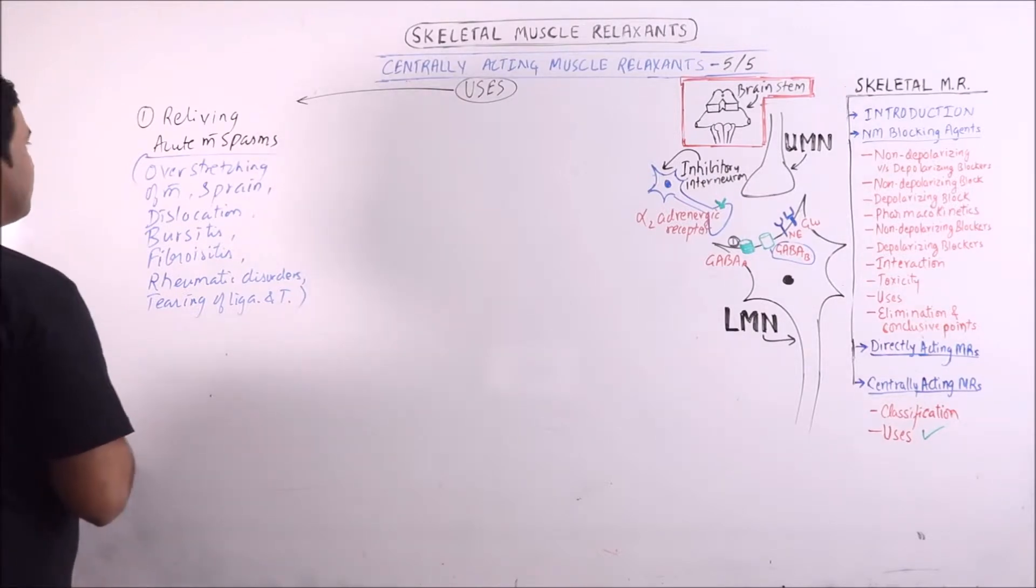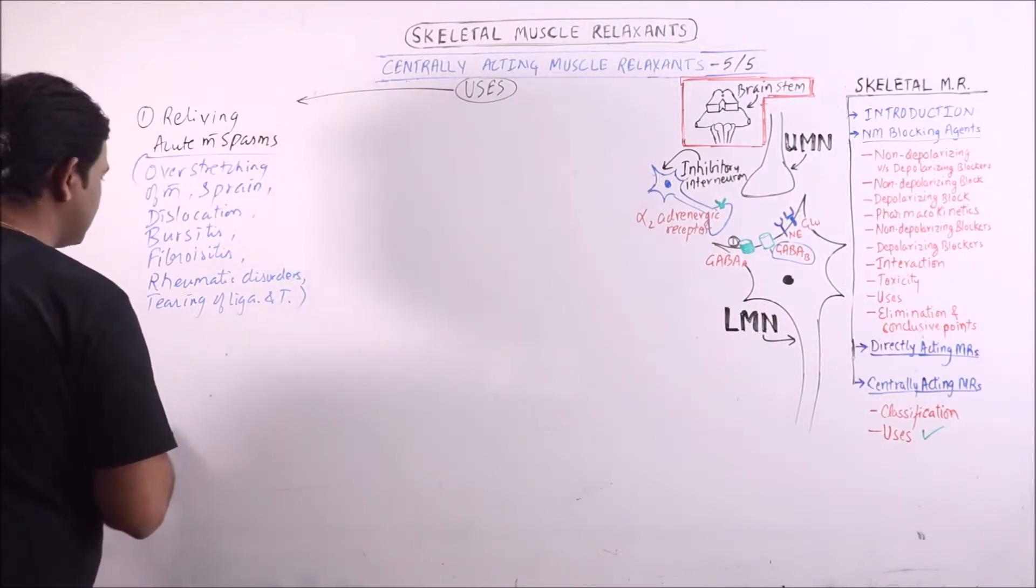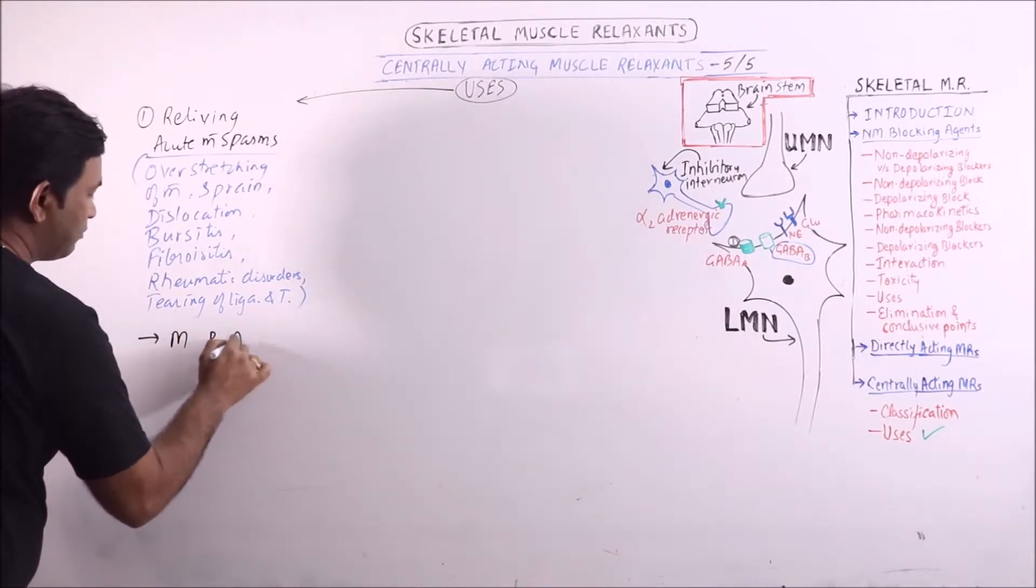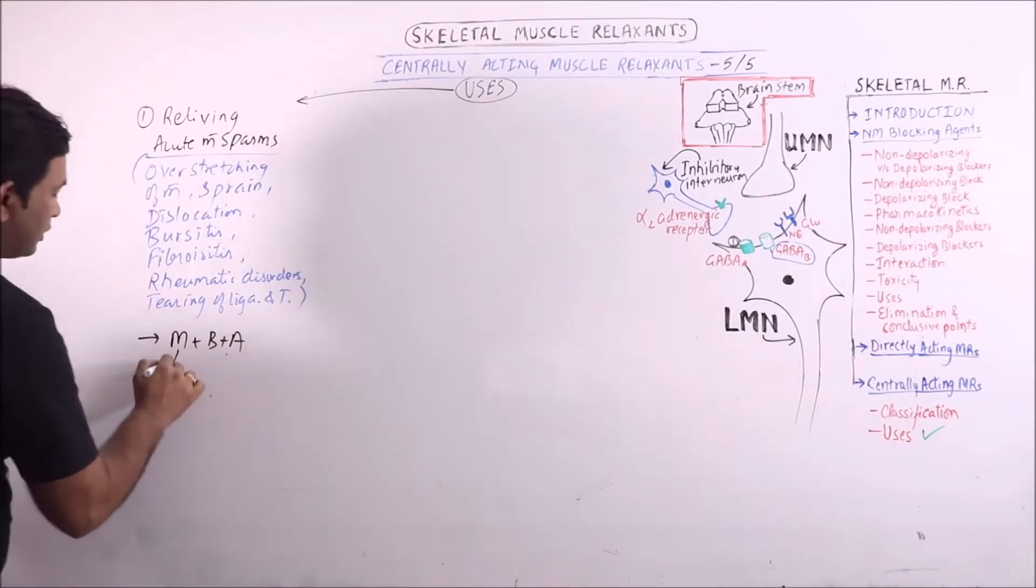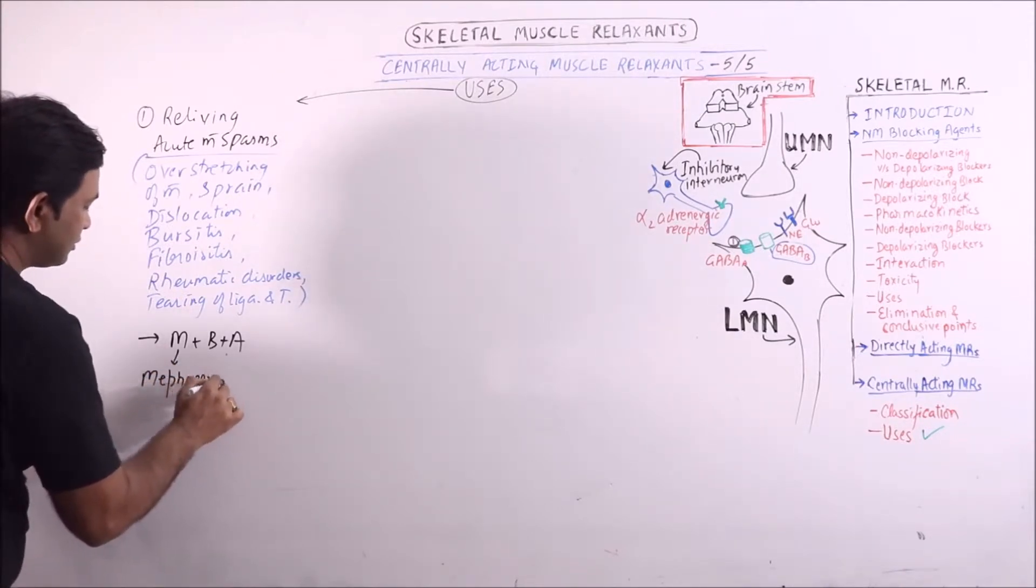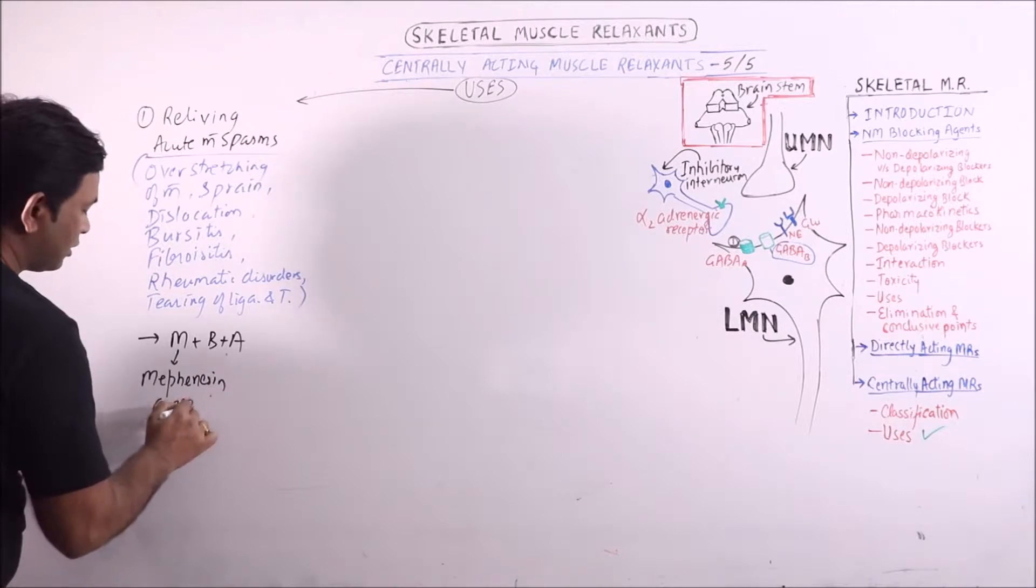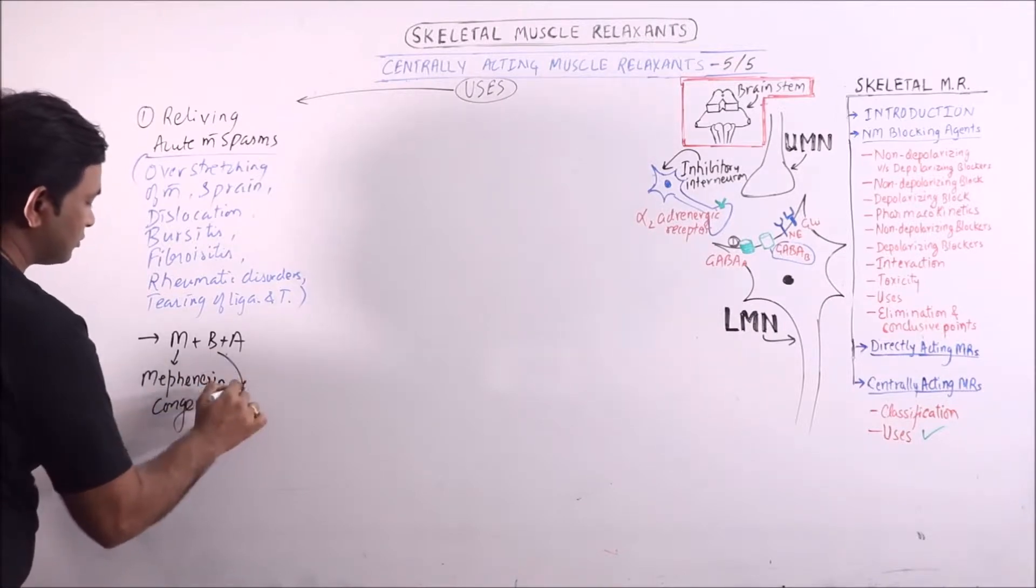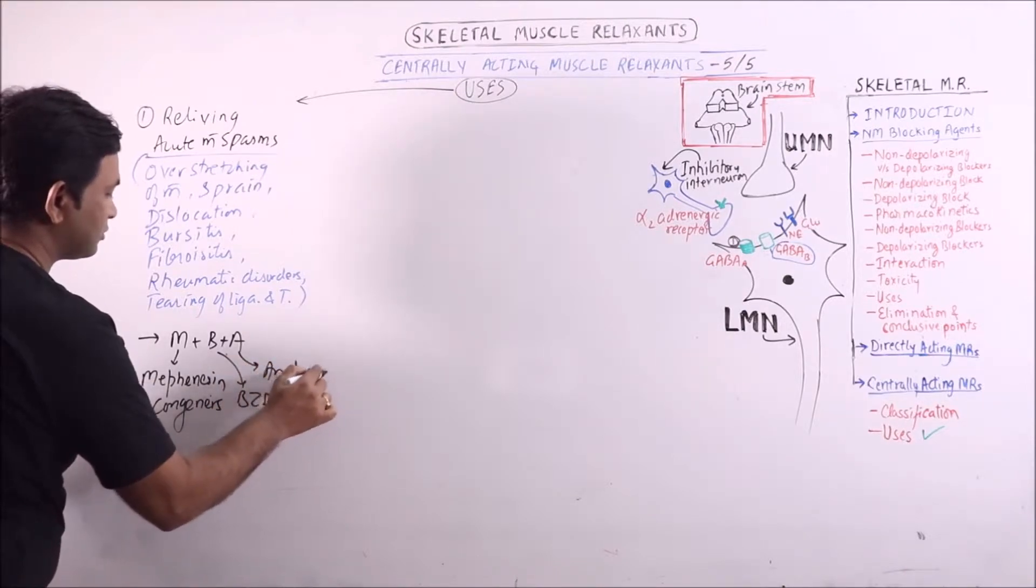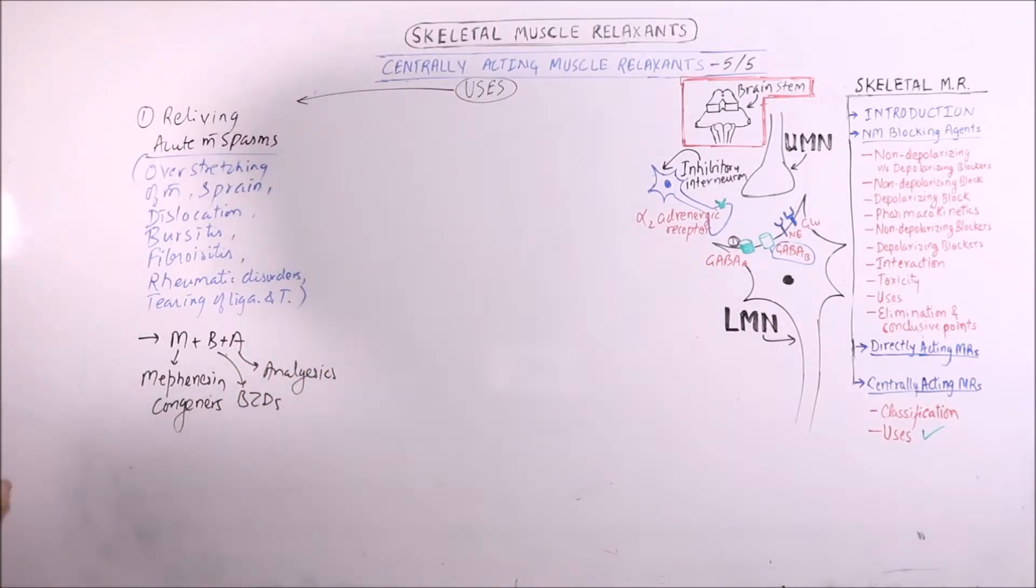fibrositis. For treatment of acute muscle spasms, mefenesin, congeners, benzodiazepines, and analgesics can be given, although not so effective.